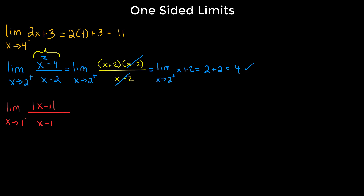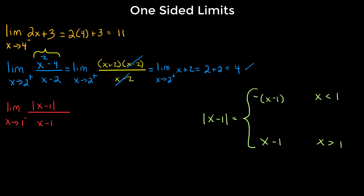We need to explore how to rewrite this, because every absolute value function is a piecewise function. The absolute value of (x - 1) can be rewritten as: negative (x - 1) for x less than 1; (x - 1) for x greater than 1; and 0 when x equals 1, since 1 - 1 = 0. We've officially rewritten this as a piecewise function.